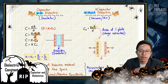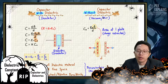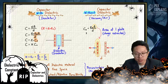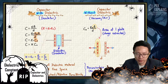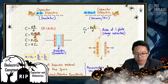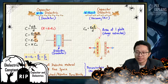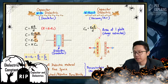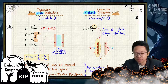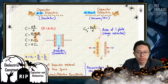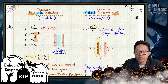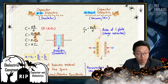Now let us start with capacitor without dielectric. The formula uses C₀ — the naught means without dielectric. C₀ equals ε₀A/D. This is the internal structure formula for capacitance.